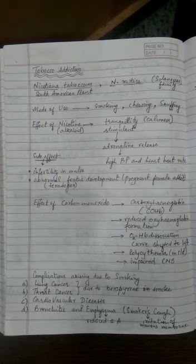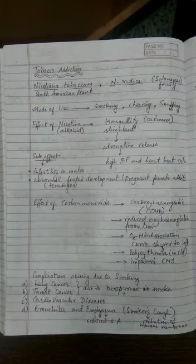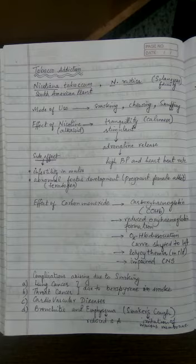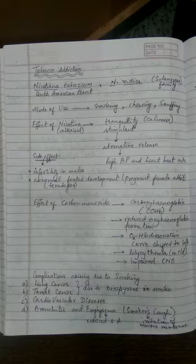Tobacco also contains carbon monoxide, which reduces the oxygen-hemoglobin binding efficiency, so oxyhemoglobin formation decreases. This causes breathing problems because the body's cells do not get sufficient oxygen to perform aerobic respiration. As we learned in 11th class, the oxygen-hemoglobin dissociation curve in cigarette smokers shifts towards the left.